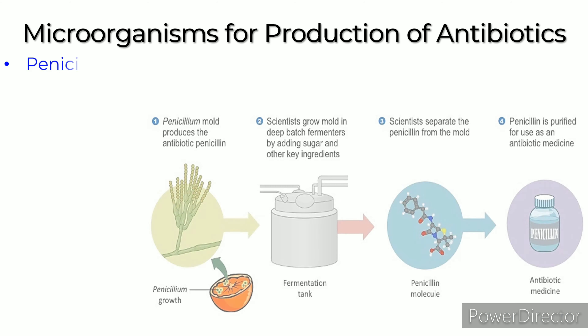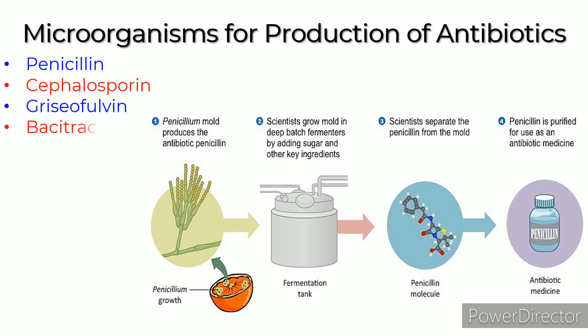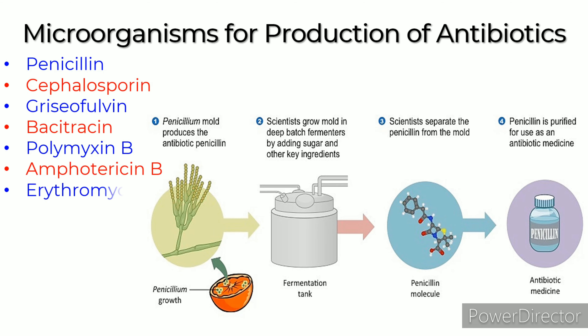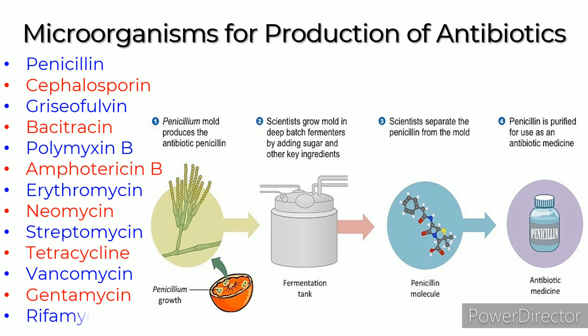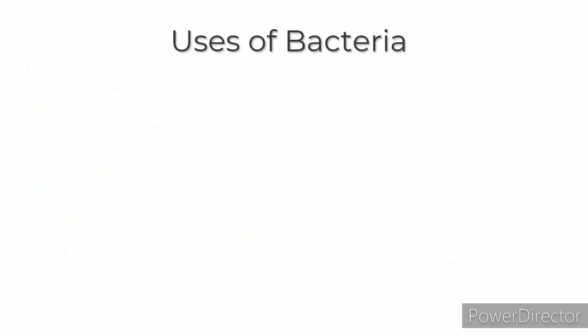Antibiotics made from microorganisms include Penicillin, Cephalosporin, Griseofulvin, Bacitracin, Polymyxin B, Amphotericin B, Erythromycin, Neomycin, Streptomycin, Tetracyclin, Vancomycin, Gentamycin, and Rifamycin. To produce antibiotics like penicillin, the penicillin mold is grown in deep batch fermenters by adding sugar and other key ingredients. The penicillin is then separated from the mold, purified, and used as an antibiotic medicine.